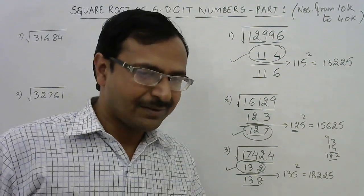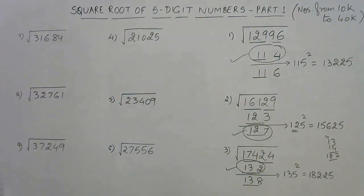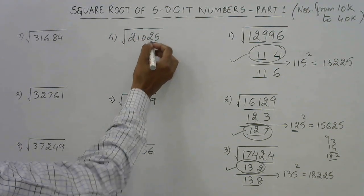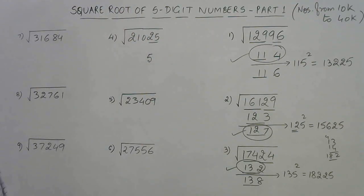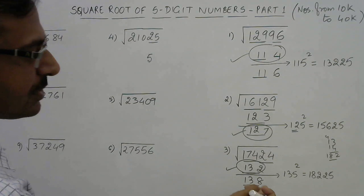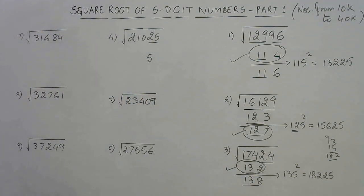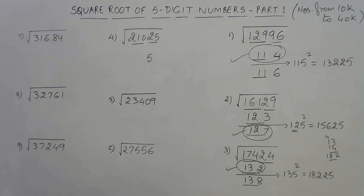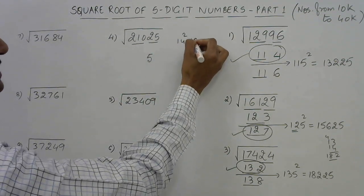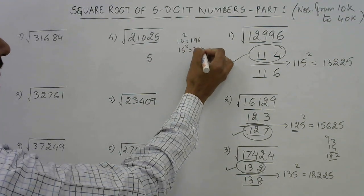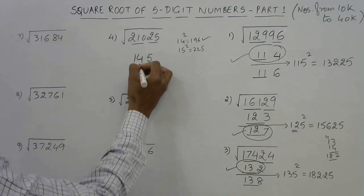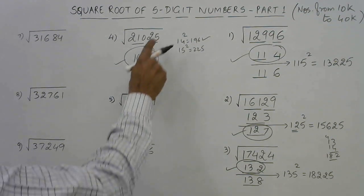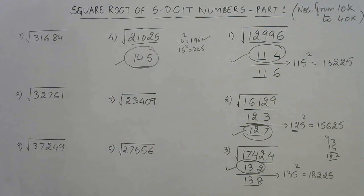Isn't it amazing? A little bit of practice is required to master this. Let's see more examples — a number ending with 5. In the case of numbers ending with 5 we have only one option, that is 5 itself. In other digits we have two options, but here we have only one, so our answer comes out directly. For the triplet 210, the perfect square below it is 14 squared, 196, because 15 squared is 225 which is above 210. So 14 is the balance part, giving the answer 145 directly. All 5-digit numbers ending with 5 — the square root can be found virtually orally.